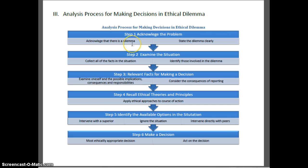The first step is to acknowledge that there is an ethical problem. When you acknowledge the dilemma, the first thing you need to do is state specifically what the dilemma is — it needs to be clearly stated. For example, you cannot just say that you think there is a problem in finances. What you want to say is: I believe this officer is perhaps receiving money from suspected criminals. He goes to the bank frequently, he has large sums of cash, he stops at a location every week, and he is consorting with known drug dealers. So you state clearly what the problem is.